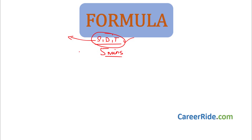And then we'll head on to problems on trains. Speed, distance and time have their own formulas — there are 3 formulas. How to remember these formulas? Just draw a Y. Now, out of speed, distance and time, generally in numericals, larger quantities are of distance — like 1000 kilometers, 500 kilometers, etc.